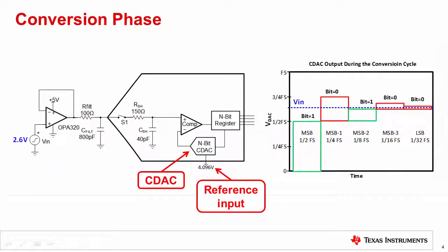This slide shows the conversion phase. At the start of the conversion phase, switch S1 opens and the input voltage is stored on the sample-and-hold capacitor. In this example, 2.6 volts is stored on the sample-and-hold capacitor. The SAR ADC operates by using a binary search algorithm to converge to the input signal. At the heart of the SAR ADC architecture, the capacitive DAC, or CDAC, generates binary weighted voltages as a function of the reference input.